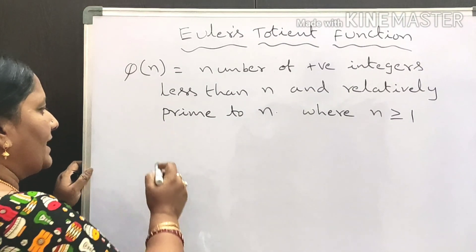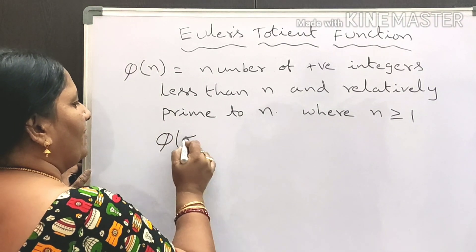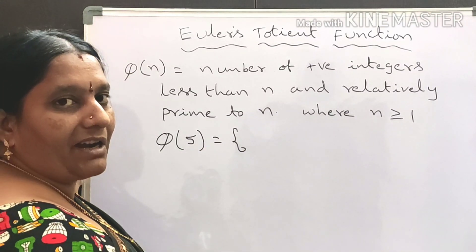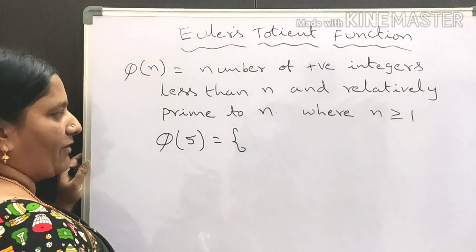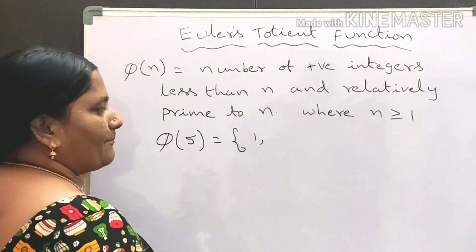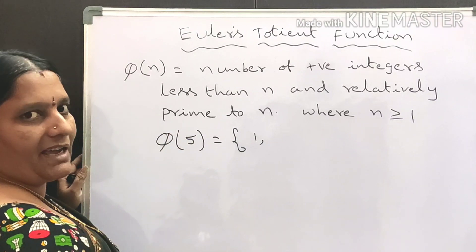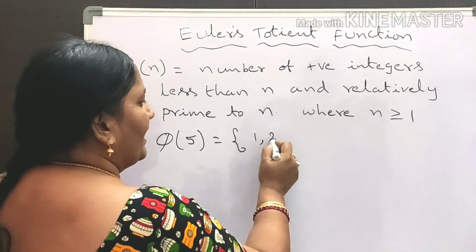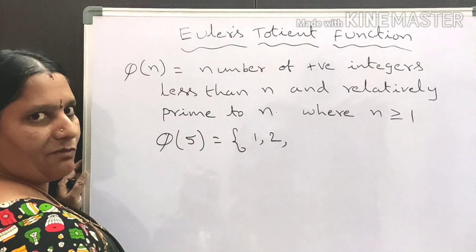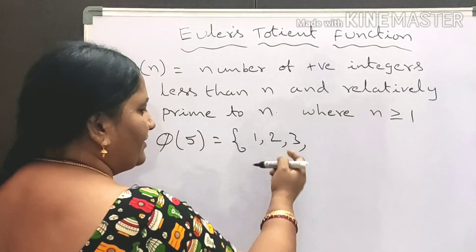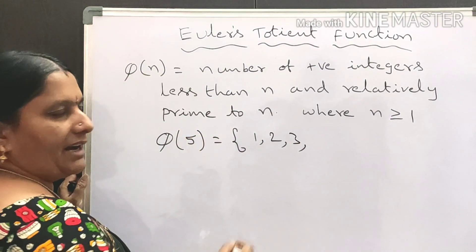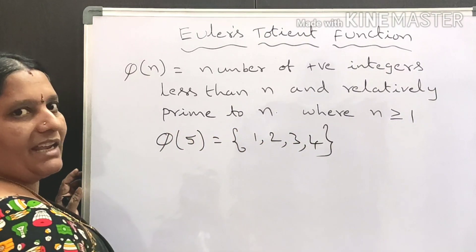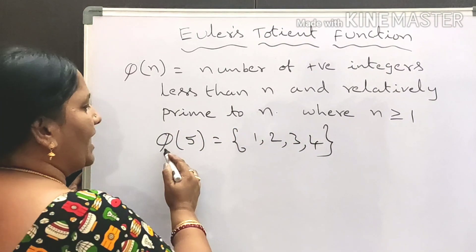Let us take phi of 5. We are finding the positive integers which are less than 5 and relatively prime to 5. If we take 1, the GCD of 1 and 5 is 1, so 1 and 5 are relatively prime. Similarly, GCD of 2 and 5 is 1, and GCD of 3 and 5 is 1.